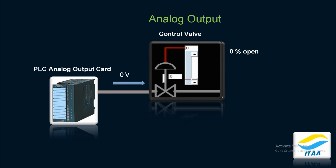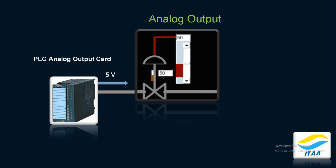Now, from the analog output card, the signal will travel to the final control element — in this case, a control valve. If the PLC sends 0V to the control valve, that means the PLC has ordered the control valve to open 0%. Again, same principle: 0V means 0%. If the PLC sends 5V from the output card to the control valve, that will be a 50% opening order — telling the control valve to allow 50% of the flow.